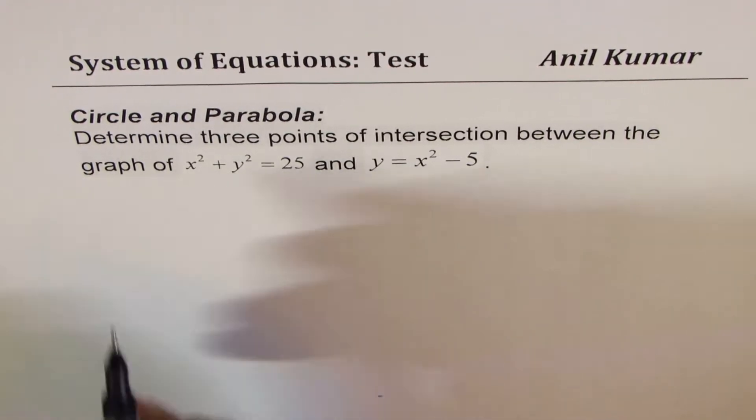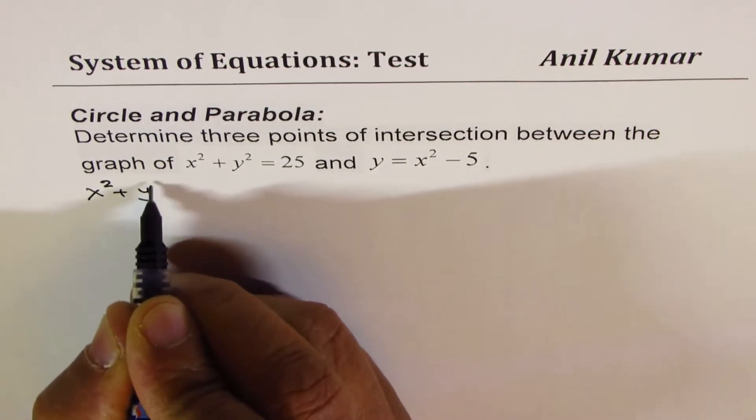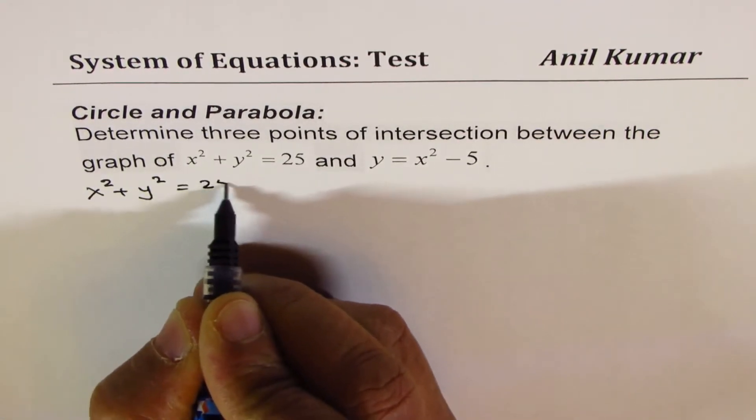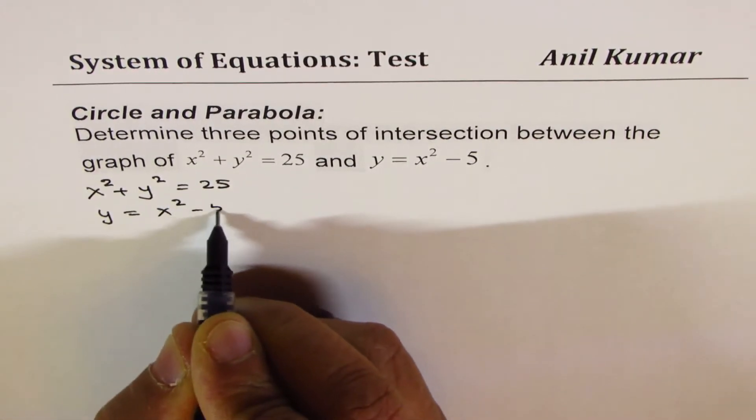So we are given two equations here. The first one is of the circle, which is x squared plus y squared equals 25. The second one is y equals x squared minus 5.